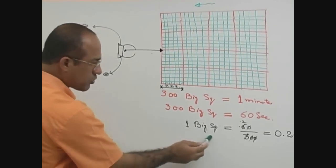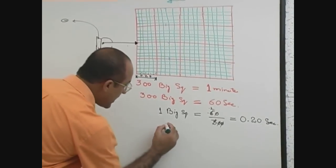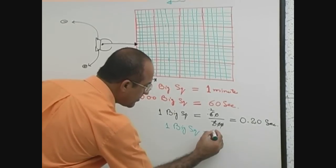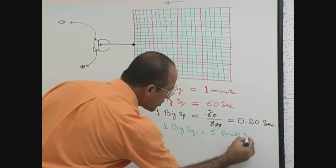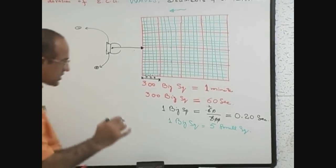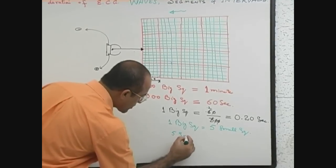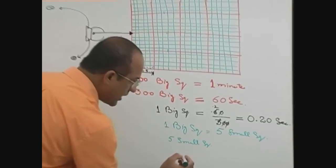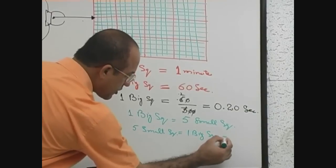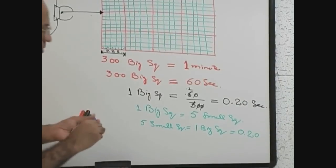One big square is equal to 0.2 second, and one big square is equal to 5 small squares. If 5 small squares are equal to 1 big square, and 1 big square is equal to 0.2 second, then 1 small square has how much duration?